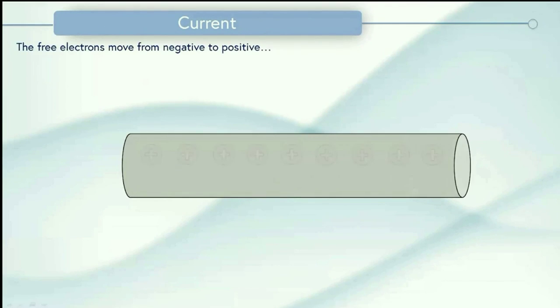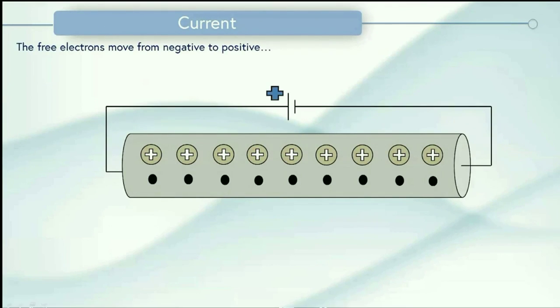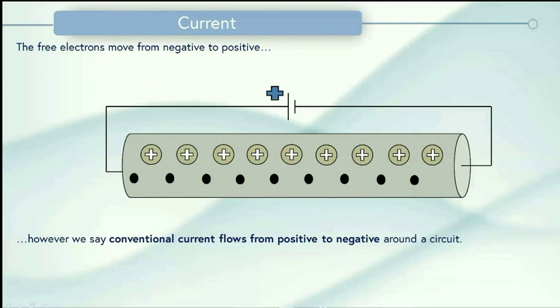So we said before the free electrons move from negative to positive. However, we say that conventional current flows from positive to negative around a circuit. From this point onwards we'll be talking about conventional current, so you don't need to worry about the fact the electrons are the charge carriers and are actually moving towards the positive.